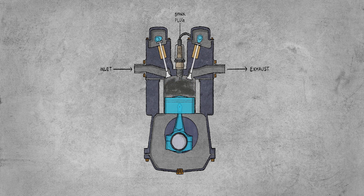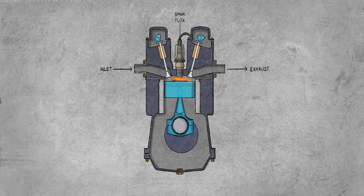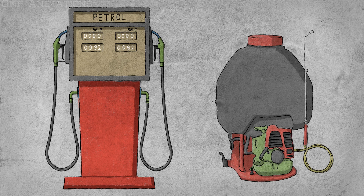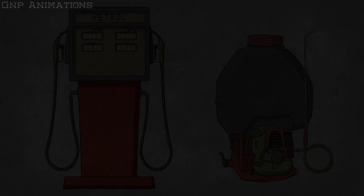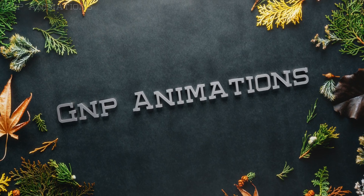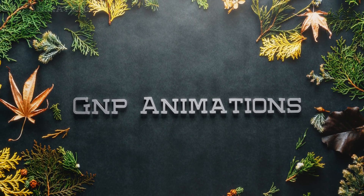With the development of the four-stroke internal combustion engine, petrol became essential to the automotive industry. Today, almost all petrol is used to fuel automobiles, with a very small percentage used to power agricultural equipment and aircraft. Welcome to GNP Animations. In this video, we are going to see how petrol is made.